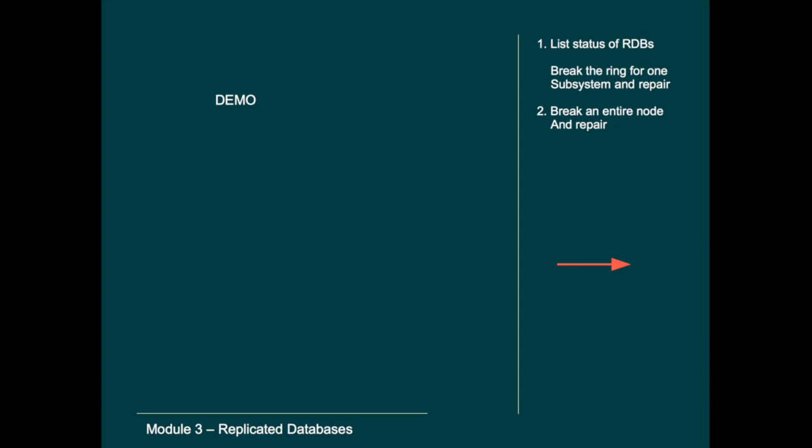In the demo, we'll stop one daemon on one node and see what happens. Then we will stop two daemons on two different nodes, meaning the remaining node will lose majority vote and go offline. In our three-node cluster, if you lose one node you still have two votes; if you lose two nodes you drop below half and go offline. Then we'll stop all daemons on one node and repair the failed node.